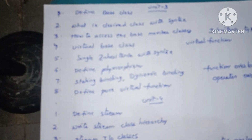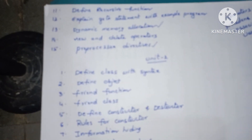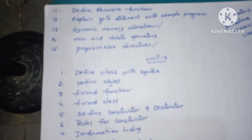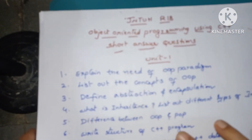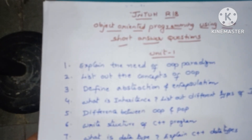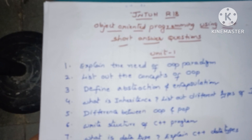These are all the short answer questions across all the units. The same questions are coming for long answer questions also — there is no difference between short and long answers, only increase the size. Concepts are the same. For example, if they ask 'define recursive function' as a short answer question, just write the definition and syntax. If the same question is asked for long answer, explain with an example program also. Similarly, 'define class with syntax' — for a short answer, definition and syntax is enough; for a long answer, you also have to write an example program, because this is a programming paper. For long answer questions, write each and every question with a program to get good marks.